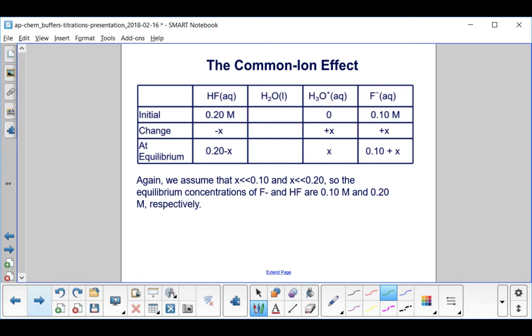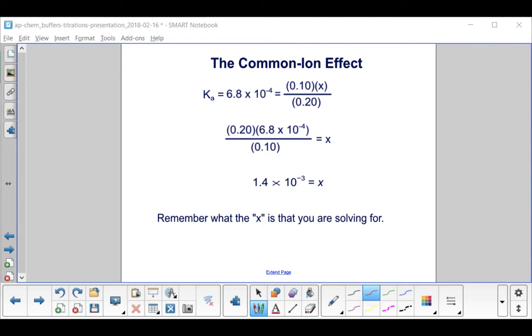Let's continue our ICE table and say that the change is minus X for the reactant and plus X for both products given the stoichiometric coefficients. Again, to simplify the problem here, let's assume that X is much less than both 0.1 and 0.2 so that the equilibrium concentrations of F minus and HF are essentially the same as their initial. We can ignore this minus X and this plus X by making this simplifying assumption. Let's substitute our concentrations at equilibrium into our Ka expression. The Ka given was 6.8 times 10 to the minus 4 equals the concentration of F minus, which we said was 0.1 times X over the concentration of HF, which is 0.2.